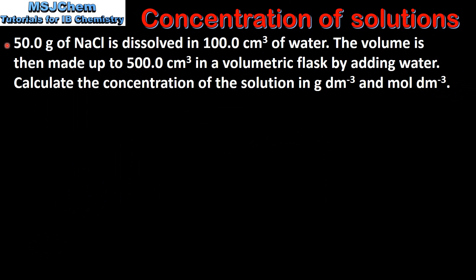Let's look at an example. 50 grams of sodium chloride is dissolved in 100 centimeters cubed of water. The volume is then made up to 500 centimeters cubed in a volumetric flask by adding water. Calculate the concentration of the solution in grams per decimeter cubed and moles per decimeter cubed.